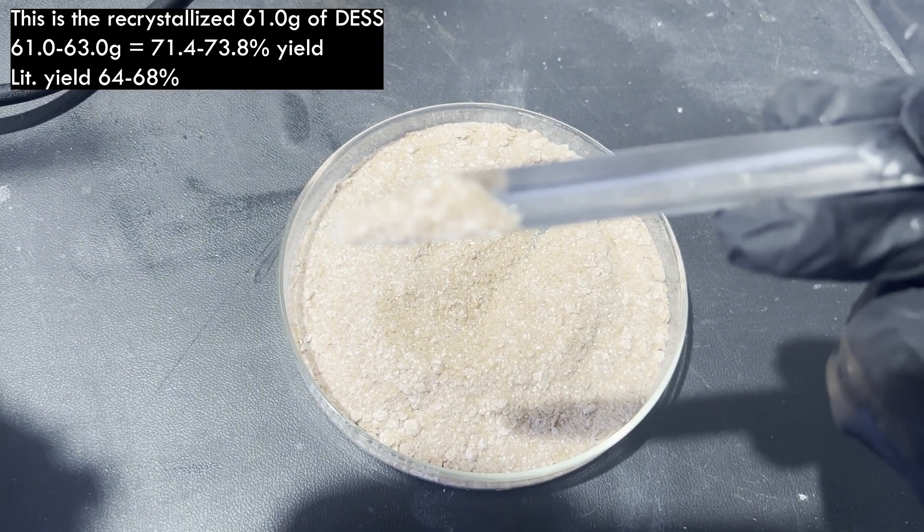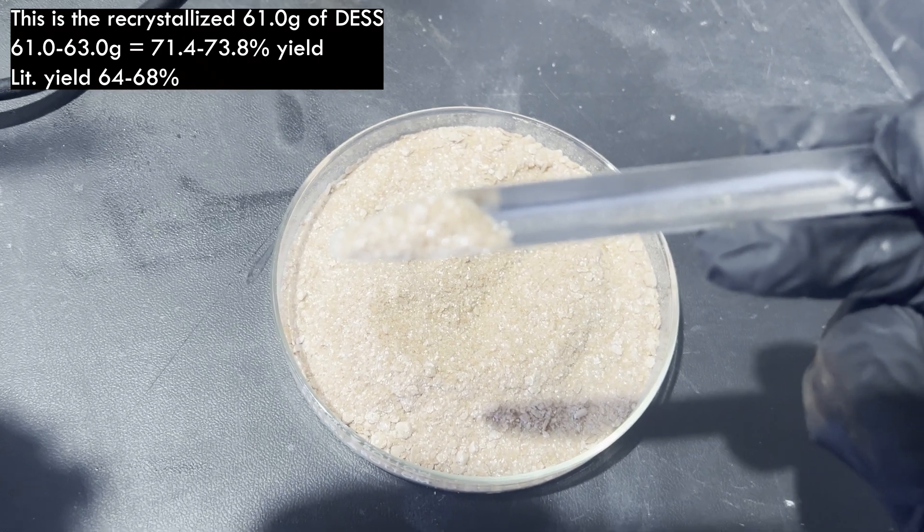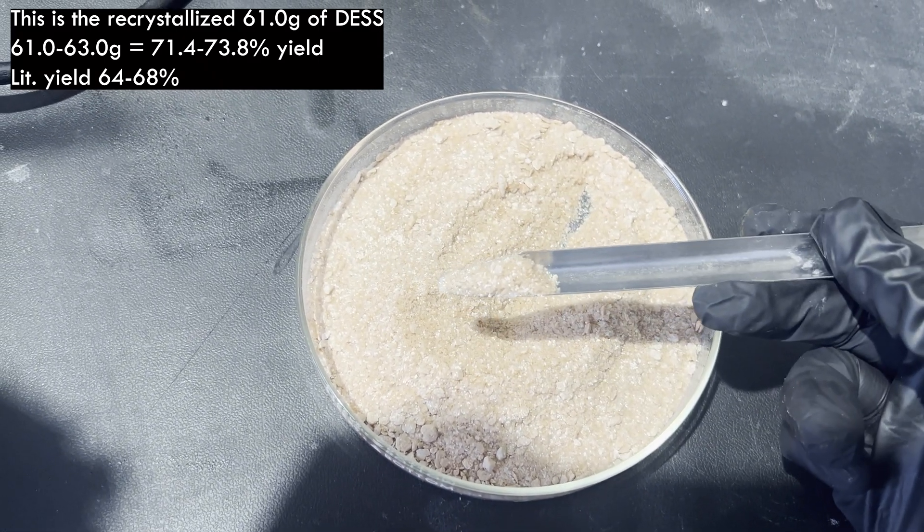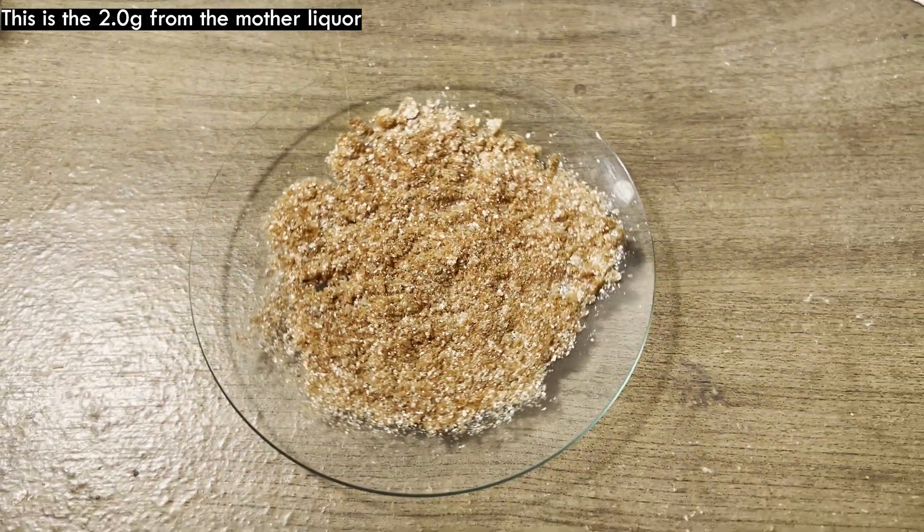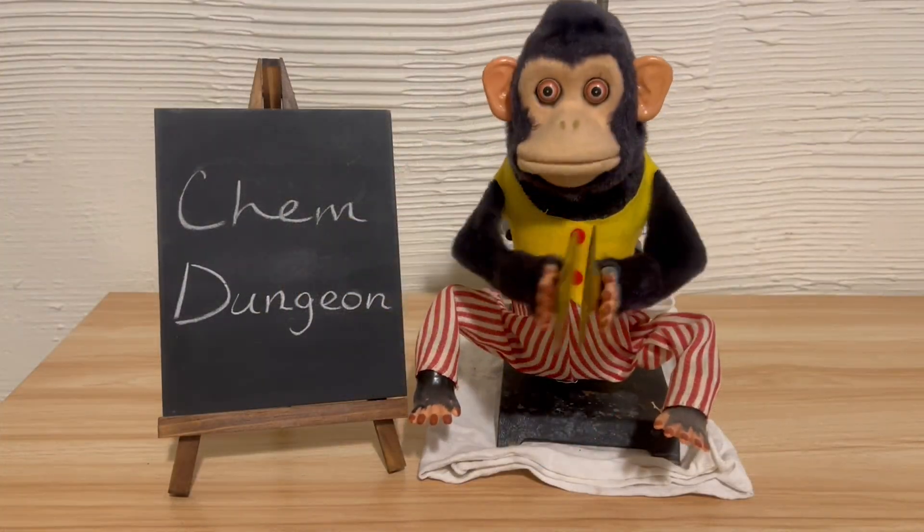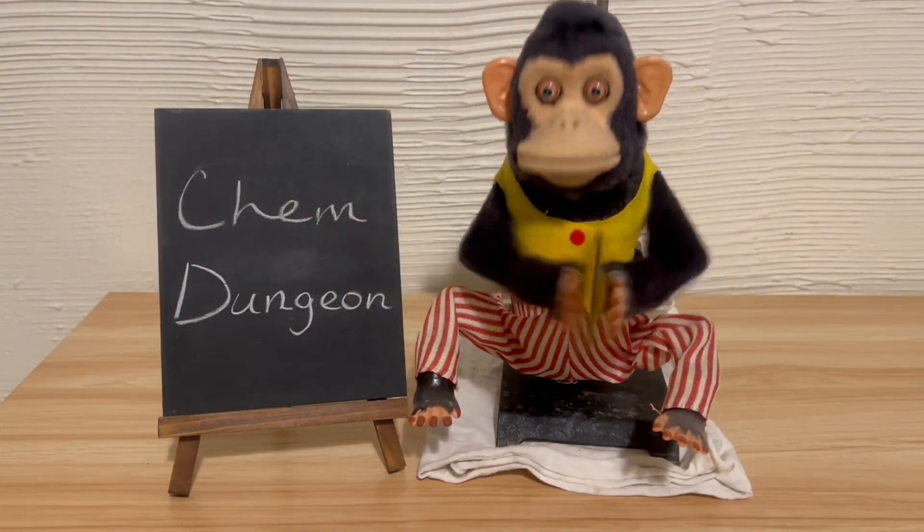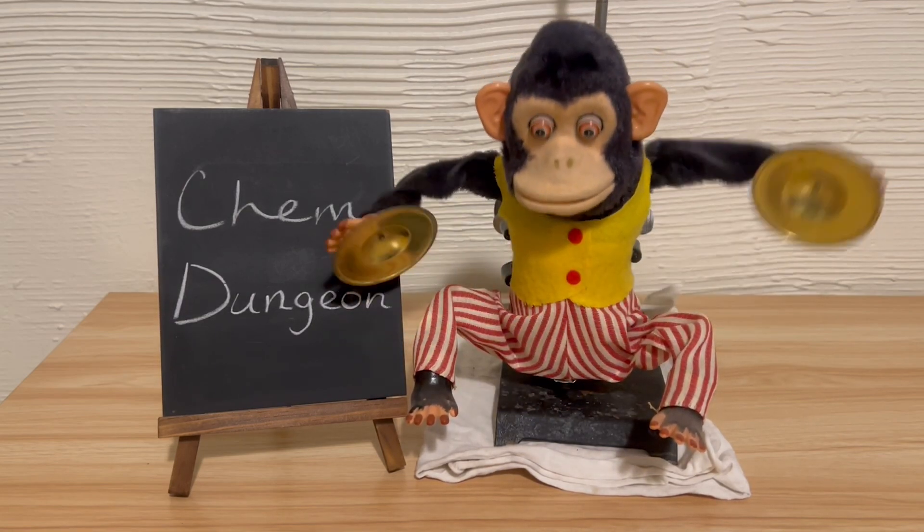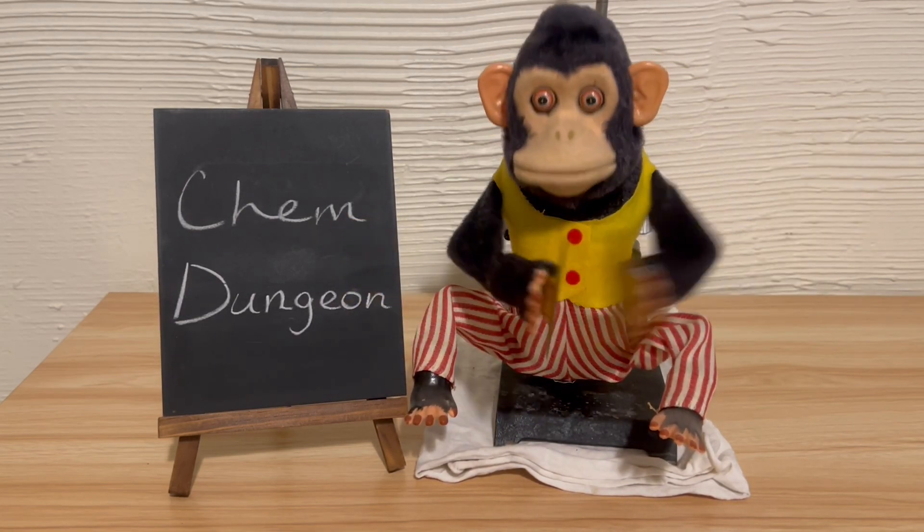And I could do a second recrystallization, adding activated carbon to it and filtering it hot again to remove the remaining colored impurities, but because the melting point is what it is, I didn't think it was all that necessary. If, after using it in the next synthesis for quinacridone, the yield is terrible, or something else goes horribly wrong that can't be anything other than the DESS, I will recrystallize it and do that, and of course I'll include that in the video.